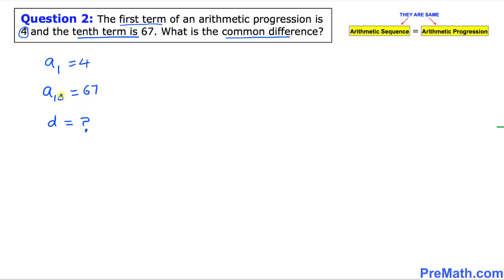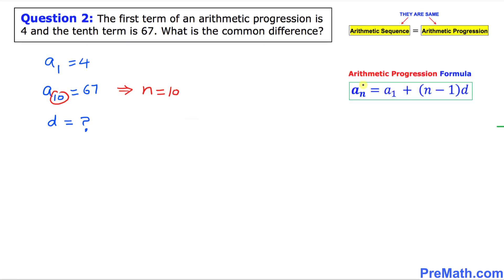From a sub 10, the 10 means our n equals 10. Now we will use the arithmetic progression formula: a sub n equal to a sub 1 plus n minus 1 times d.